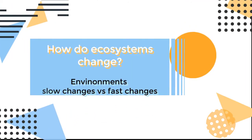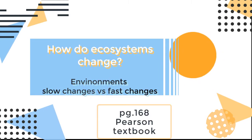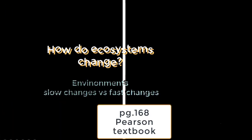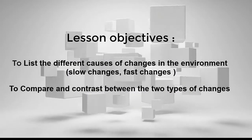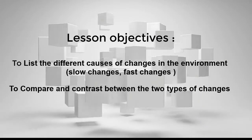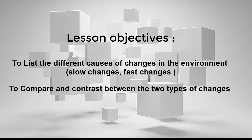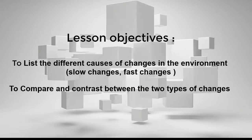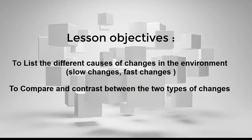Today we are going to learn about how ecosystems change environments — slow changes versus fast changes. Our lesson objectives today are to list the different causes of changes in the environment, the slow changes and fast changes, and to compare and contrast between these two types of changes.